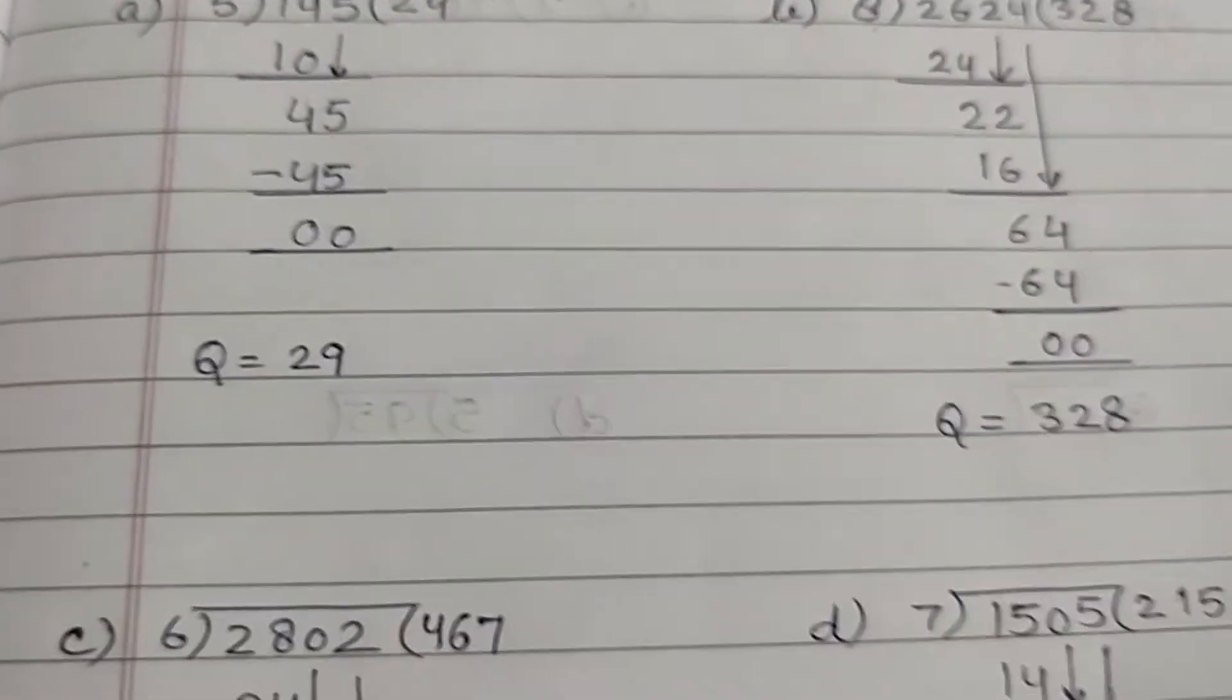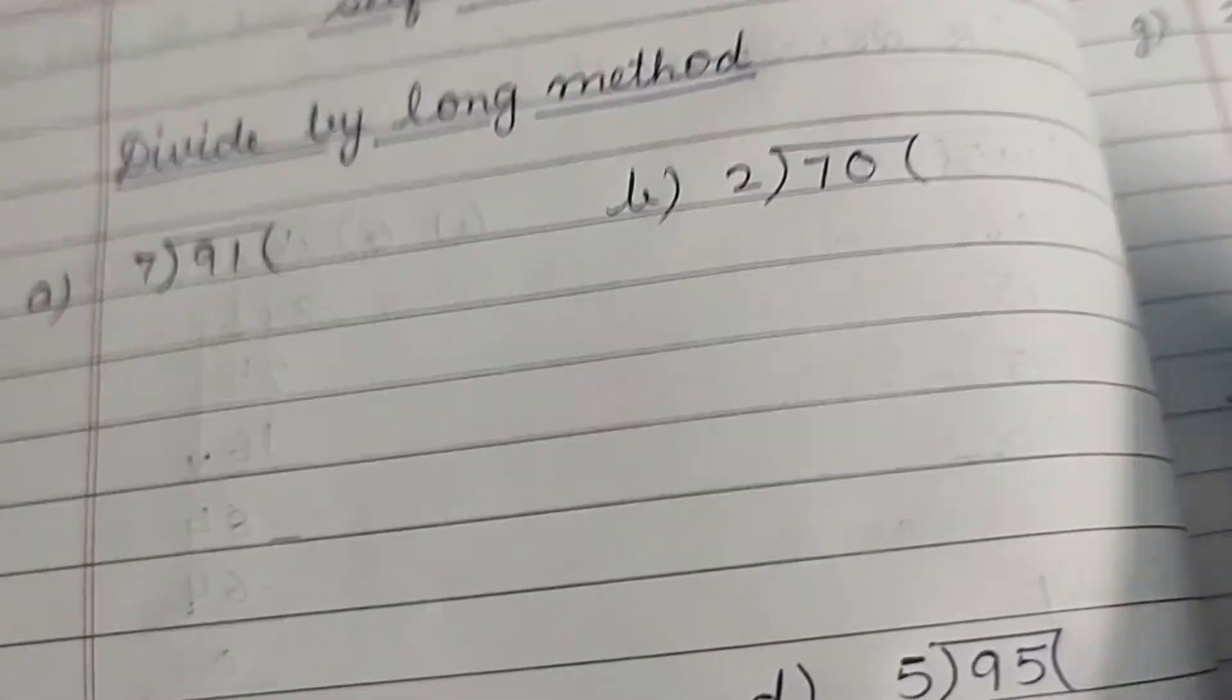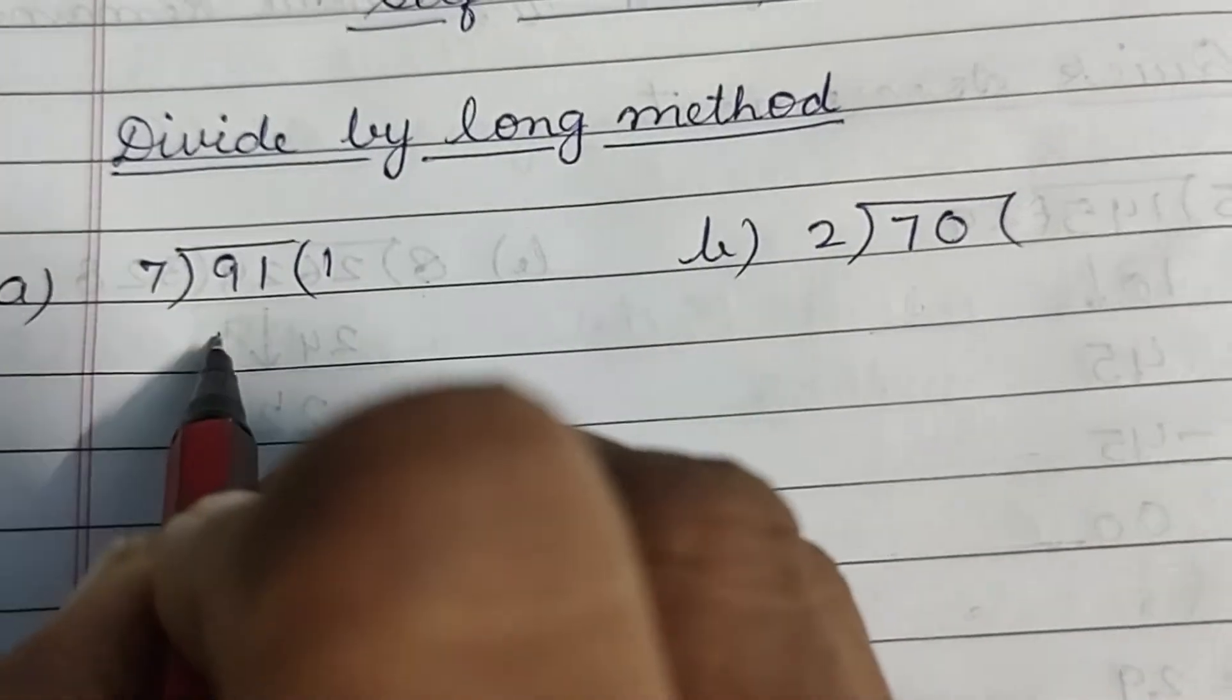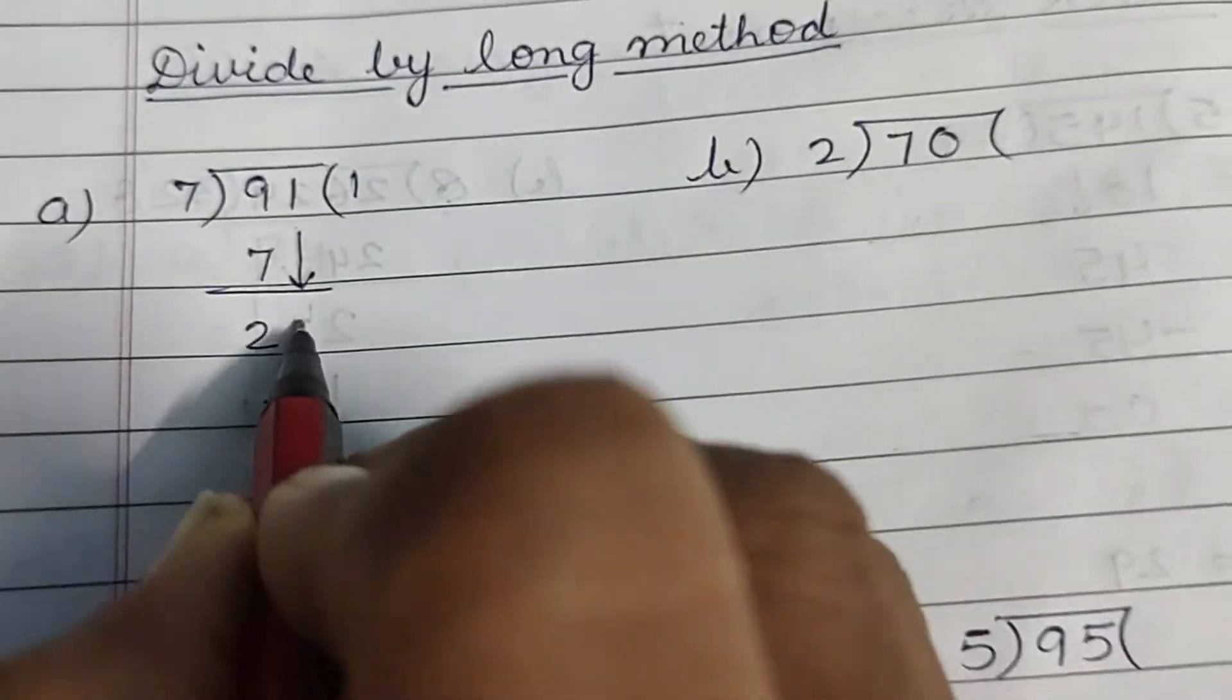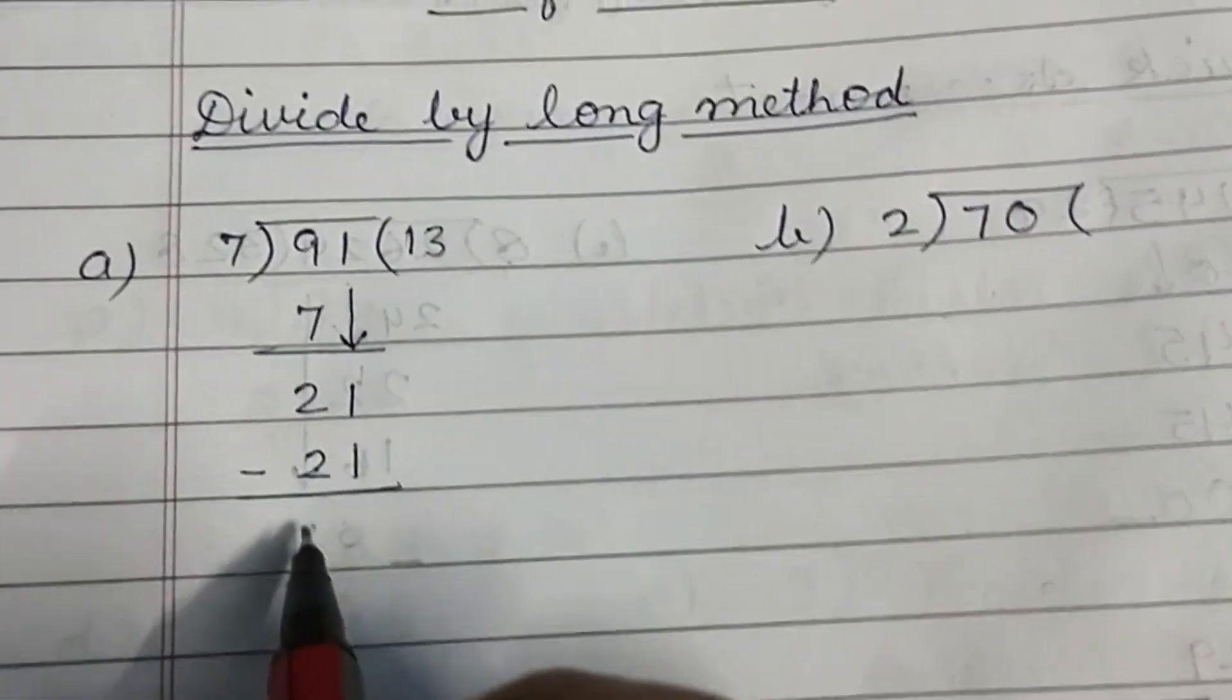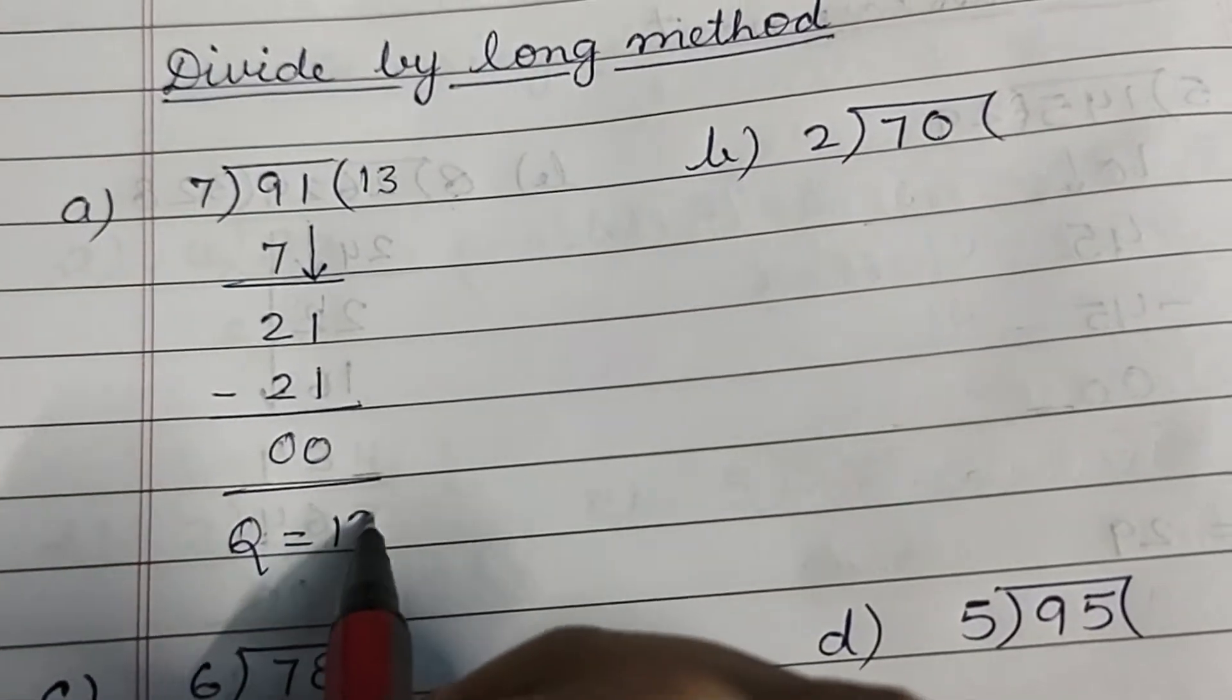Okay, these Quick Assessment ke 4 questions ho gaya humare. Now we will start Self-Practice 6H. Divide by long method. Now 7×1, 7. 9 minus 7, 2. Bring 1 down, 21. 7×3, 21. 21 minus 21, 0. And quotient is 13.